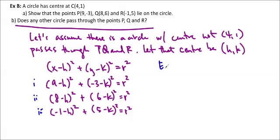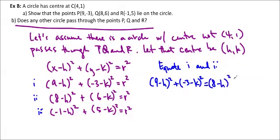So I'm going to equate 1 and 2 because they're both equal to R squared. So 9 minus H squared plus negative 3 minus K squared is equal to 8 minus H squared plus 6 minus K squared.